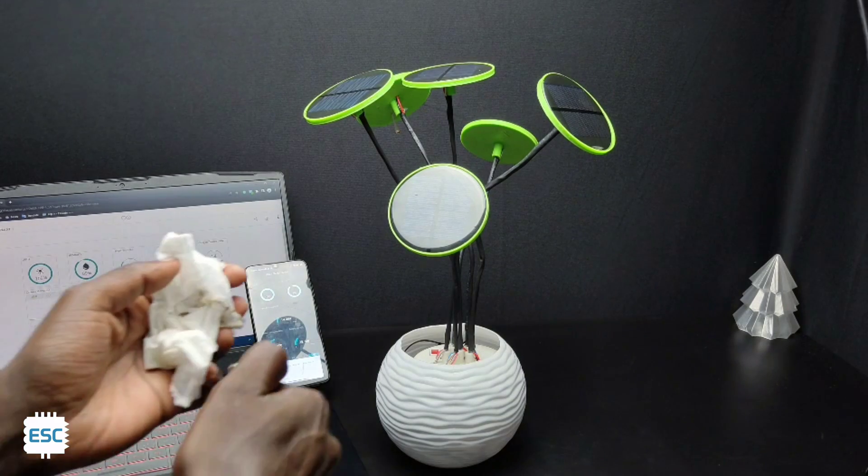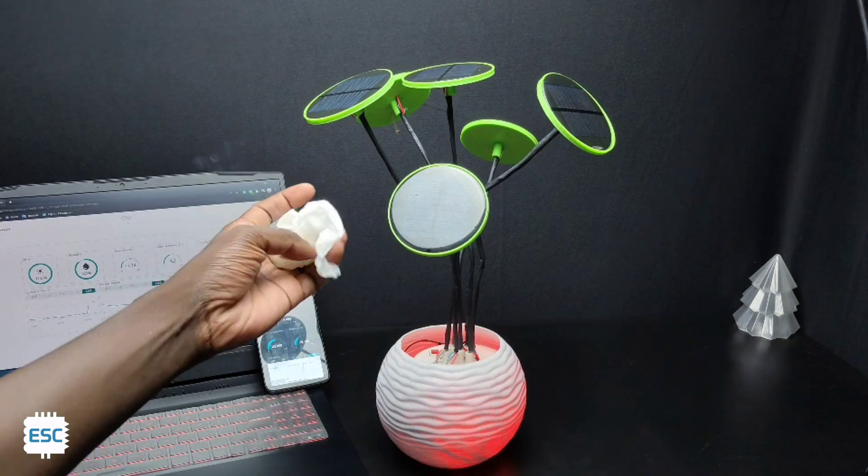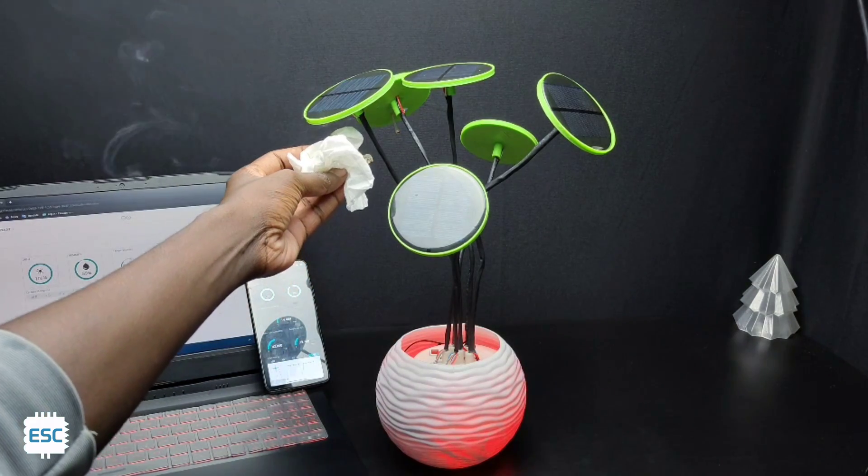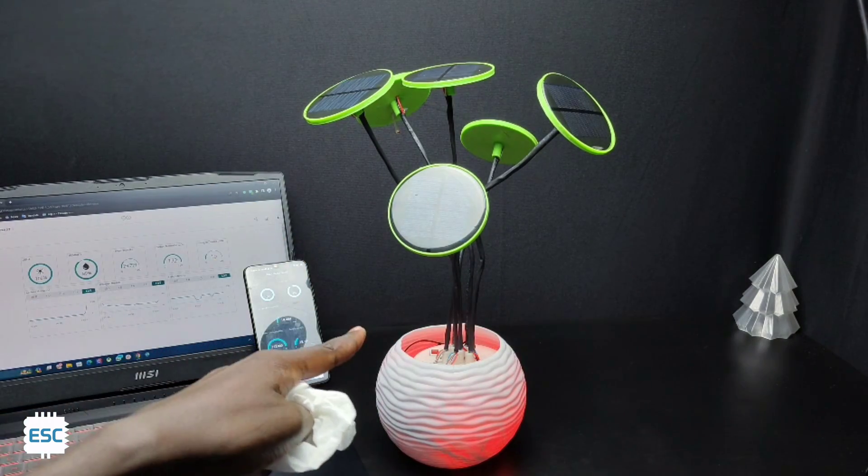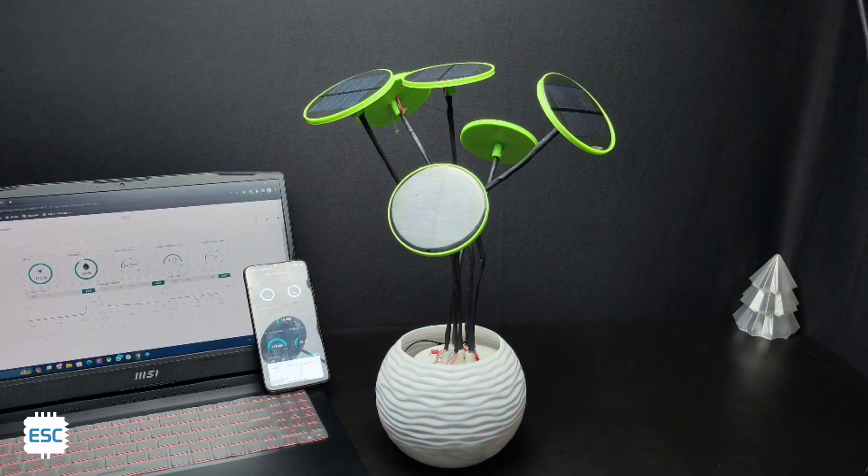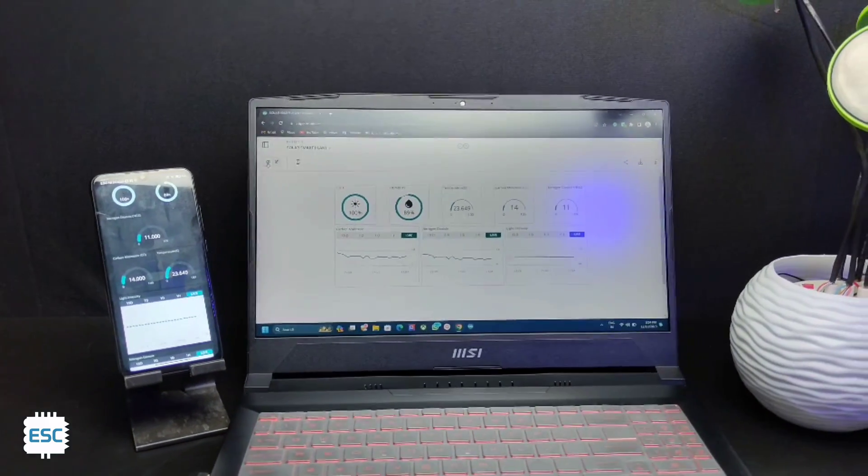Now let's test it with some smoke. Smoke means incomplete combustion which means carbon monoxide. You can see that the plant pot color changed to red when the plant is exposed to carbon monoxide. You can monitor the same readings on the website too.